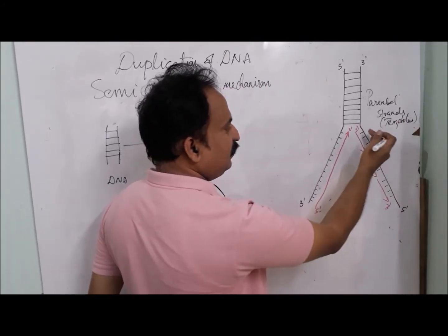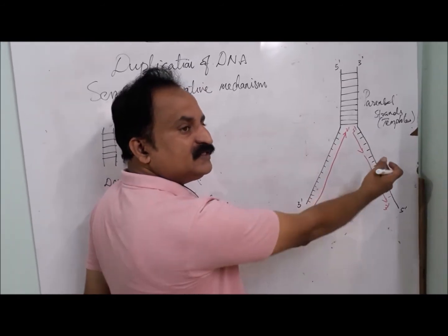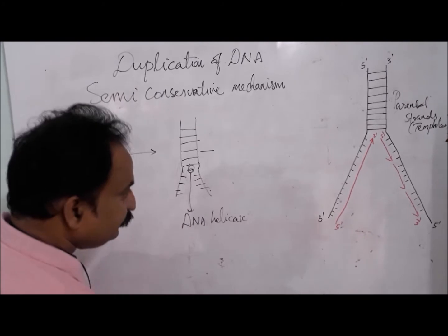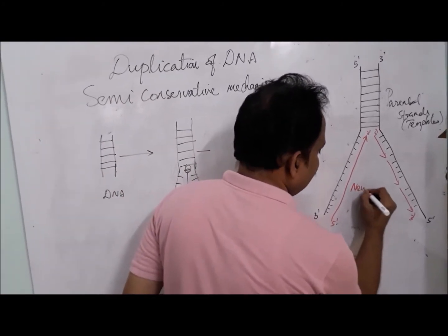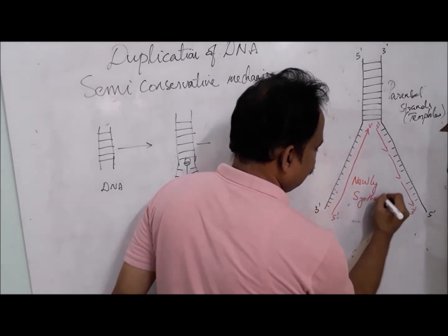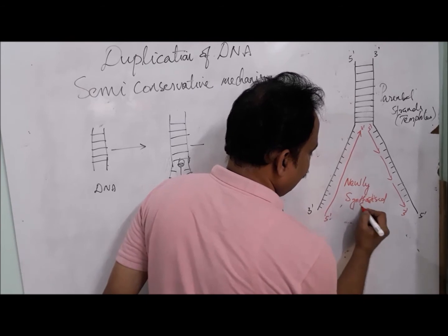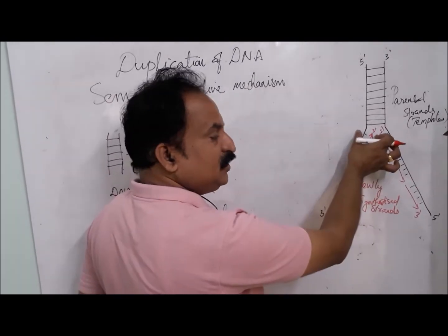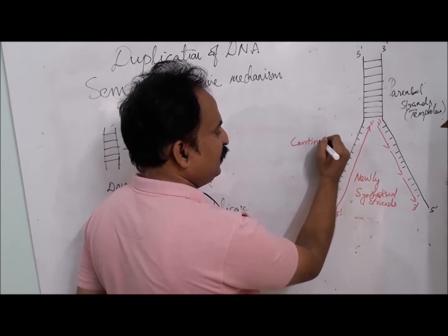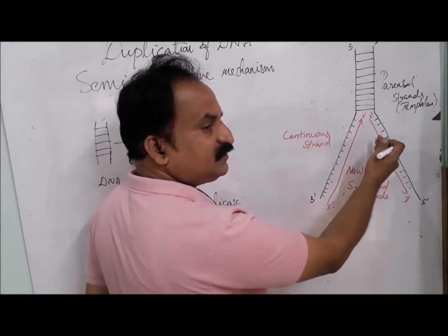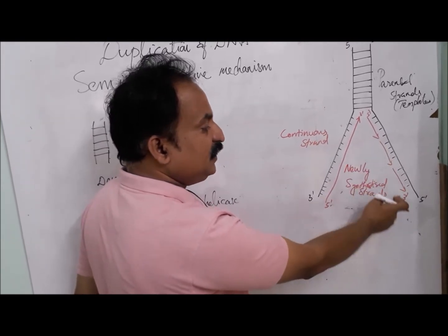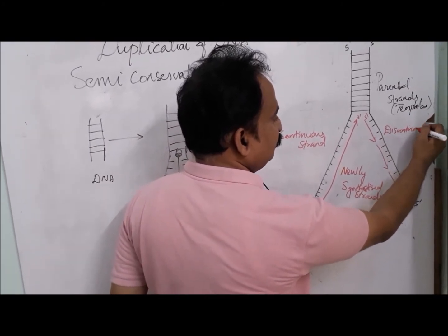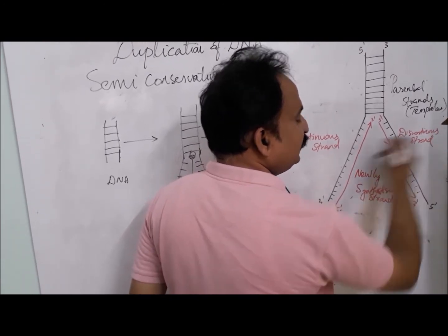Templates are formed at the replication fork, and two newly synthesized strands are produced — shown here as the red-colored lines. One strand will replicate continuously, called the continuous strand. The other strand will replicate discontinuously — replication takes place here and there — and this is called the discontinuous strand.